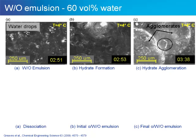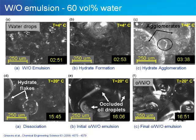Here we have a sequence of PVM images taken at 4 degrees Celsius. Initially, one sees water droplets in the continuous phase of oil. The hydrate film in image B starts to form around the outside of these droplets, and in image C the hydrates start to agglomerate. Then the temperature is raised to 20 degrees Celsius, and these hydrates begin to dissociate back down to individual flakes. Finally, the system returns to a new equilibrium with occluded oil droplets.